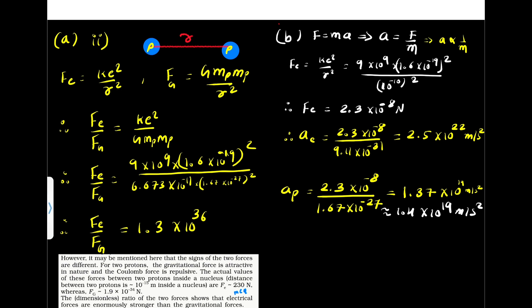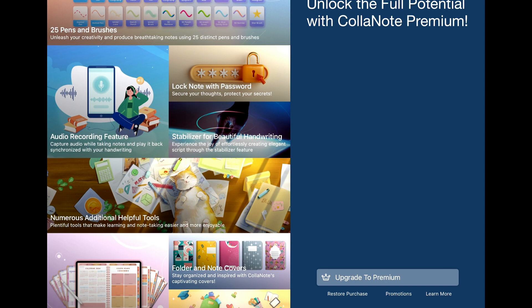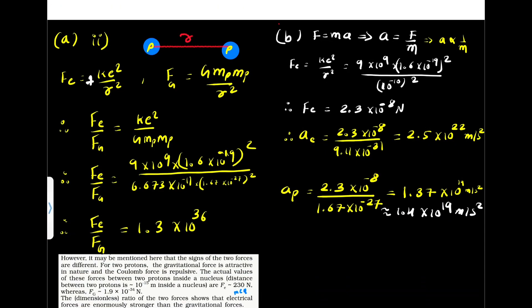One important note from the textbook: the signs of the two forces are different. A negative sign means the force is attractive, and a positive sign means it is repulsive. The gravitational force is always attractive, so its sign is negative. For two protons, the electrostatic force is repulsive, so its sign is positive. The actual values of these forces between two protons inside a nucleus are: Fe = 230 N, while Fg = 1.9 × 10⁻³⁴ N. Remember these values for MCQs. The ratio shows that electrical forces are enormously stronger than gravitational forces.